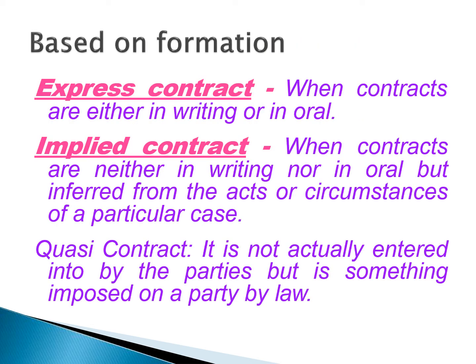Based on formation: an express contract is one which is in writing. An implied contract is one which is neither in writing nor oral, but inferred from the acts or circumstances — for example, when I enter a coffee shop and sit at a table, it is implied from my conduct that I want to have something there. A quasi contract is not actually entered into by the parties but is sometimes imposed by law — like in the case of a finder of lost goods, where by law it becomes a moral and legal duty to return it.